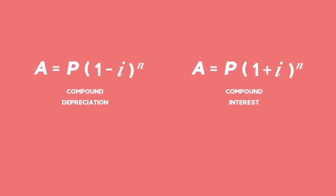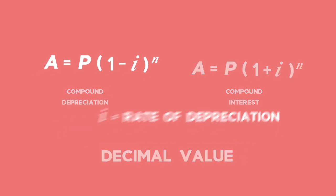The difference is we are subtracting i from 1 because i is now our rate of depreciation. The rate of depreciation should always be written as a decimal value.